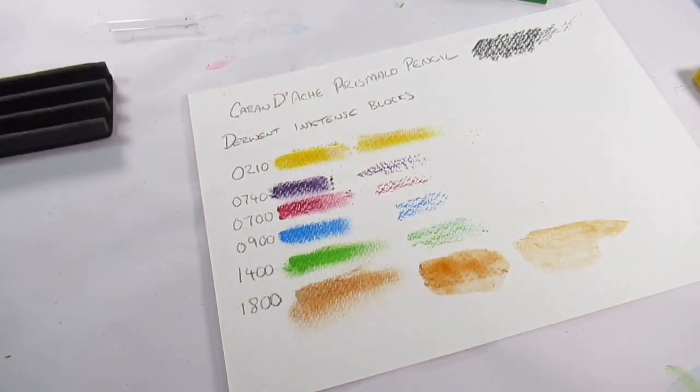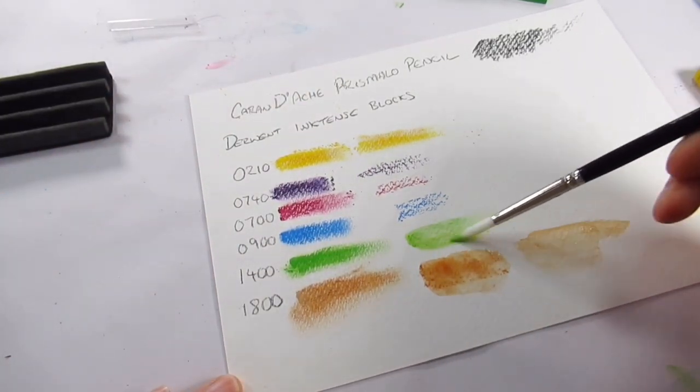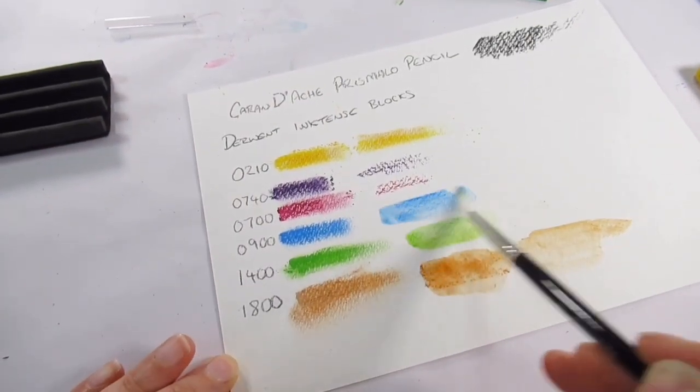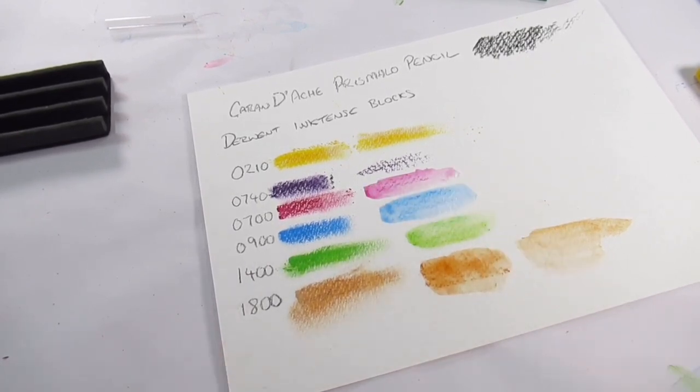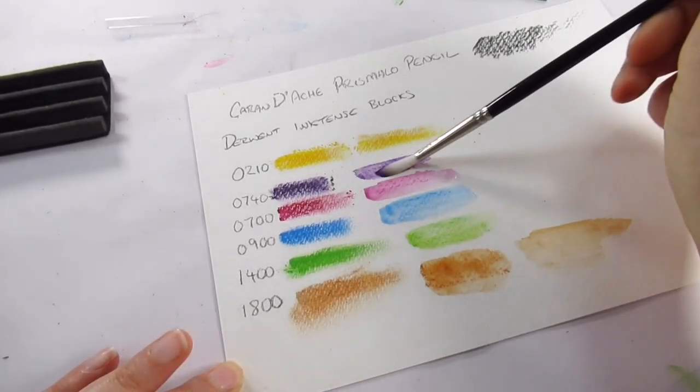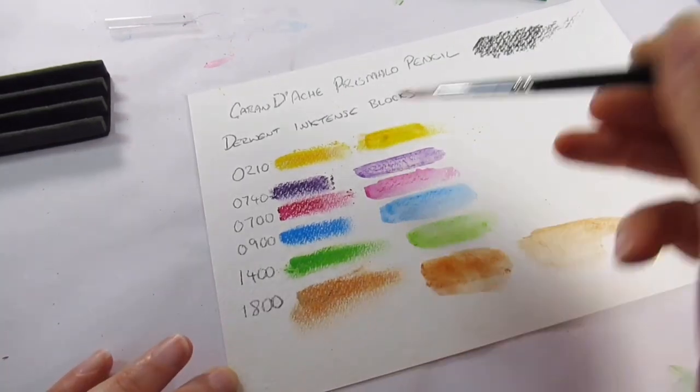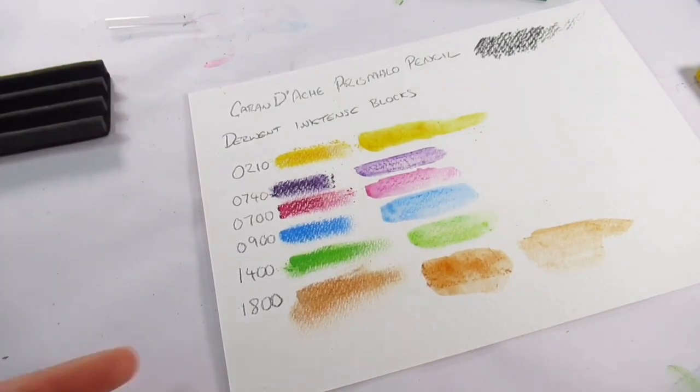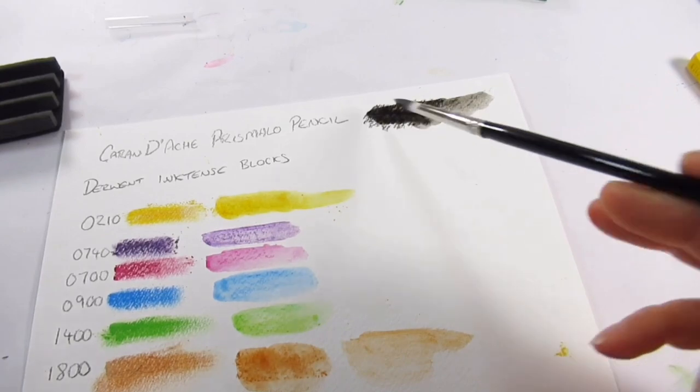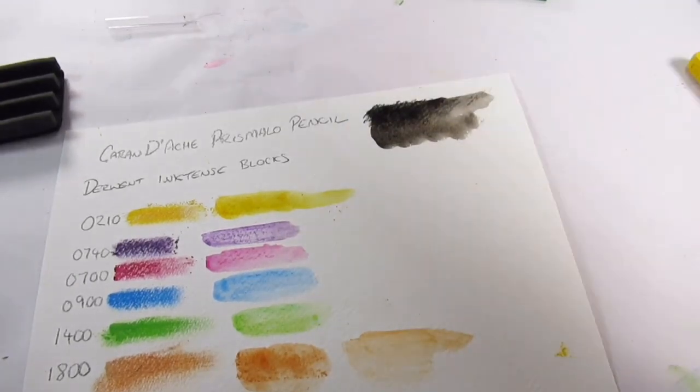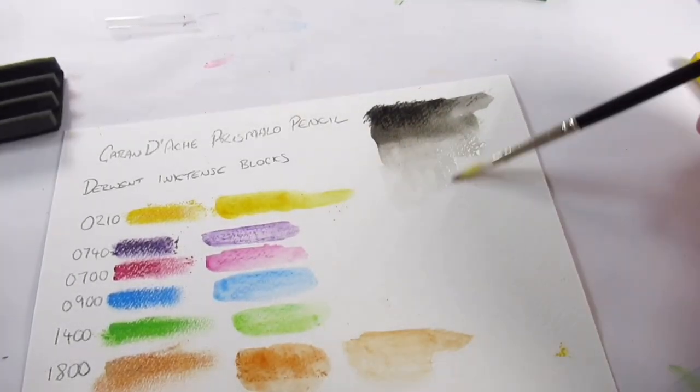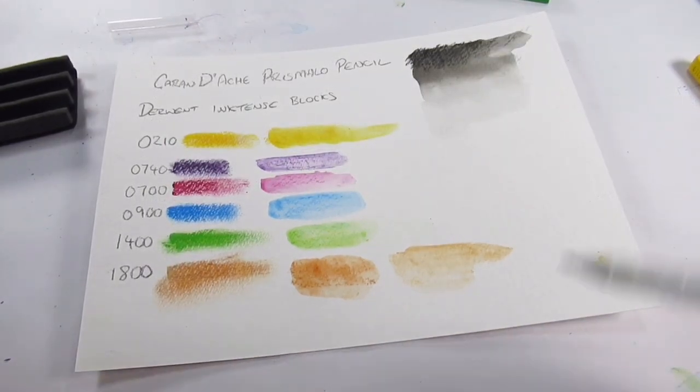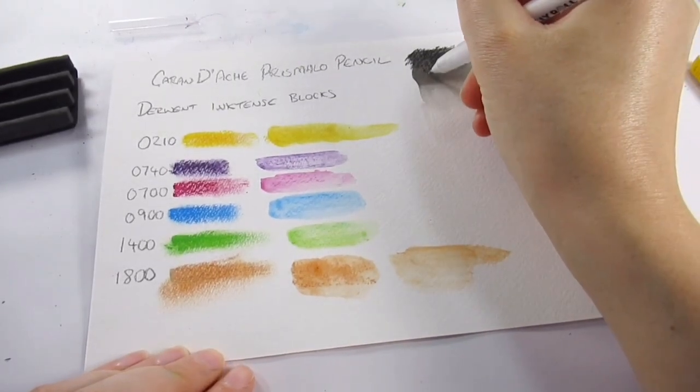Now it's easy to compare these to the Inktense pans as well because they are more like a watercolor set, but I did find that these just left a slight little bit more of a residue than the pencils and the pan set does. But again I guess that's to bind the bar together, but it wasn't anything that would be a problem.